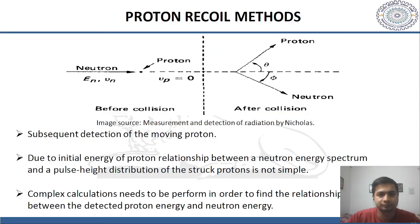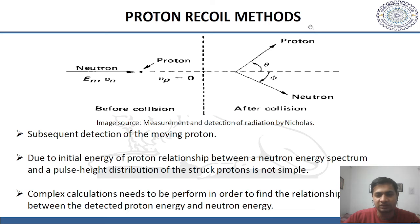Another method is the proton recoil method. In this method, the neutron collides with a proton and transfers its energy to the proton. The presence of the detected proton confirms the presence of the neutron. However, due to the initial energy distribution, the relationship between the neutron energy spectrum and the pulse height distribution of the struck protons is not simple, and complex calculations need to be performed to find the relationship between the detected proton energy and the neutron energy.